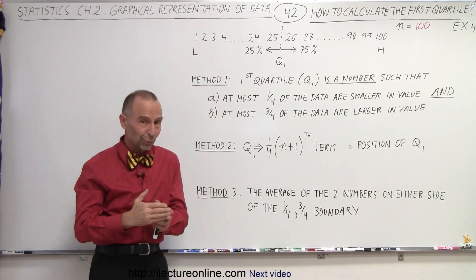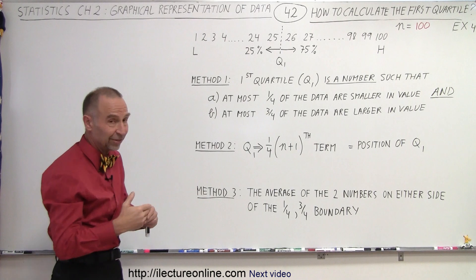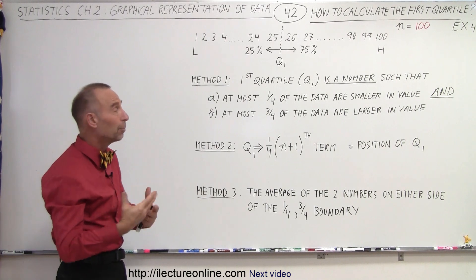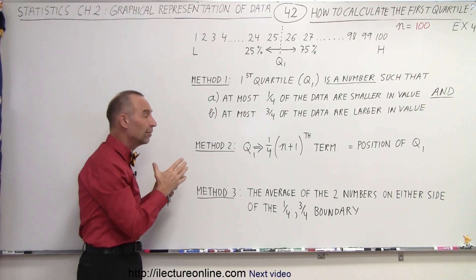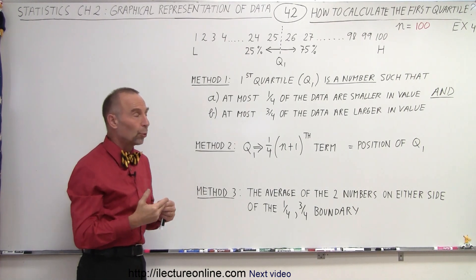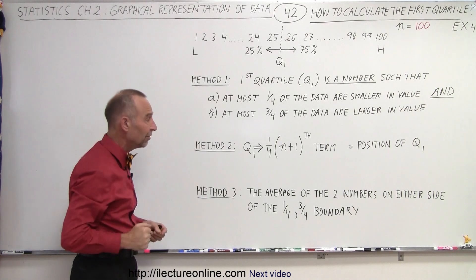Of course, there is no data point between 25 and 26, so how do we find the first quartile? Well, we have our three methods.